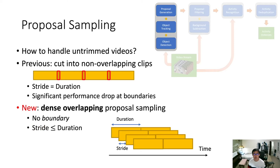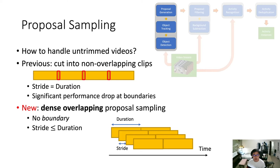That leads to the proposal sampling part. How do we handle untrimmed videos that could be indefinitely long? A simple method is to cut into non-overlapping clips, just setting the stride equal to the duration. But the shortcomings are obvious: there will be significant performance drop at boundaries. If an activity occurs at a boundary, it will be cut into two pieces and neither clip may be recognized as that activity. So it's important to use a dense overlapping proposal sampling paradigm where you simply set the stride less than the duration.